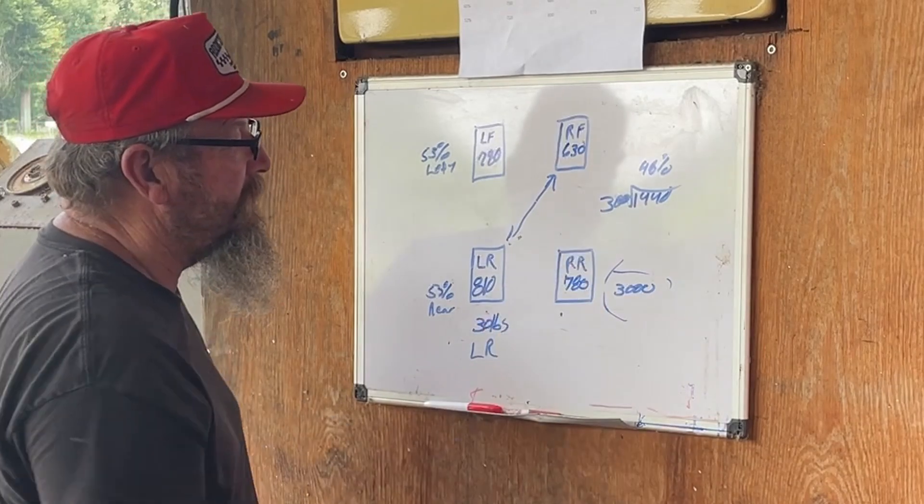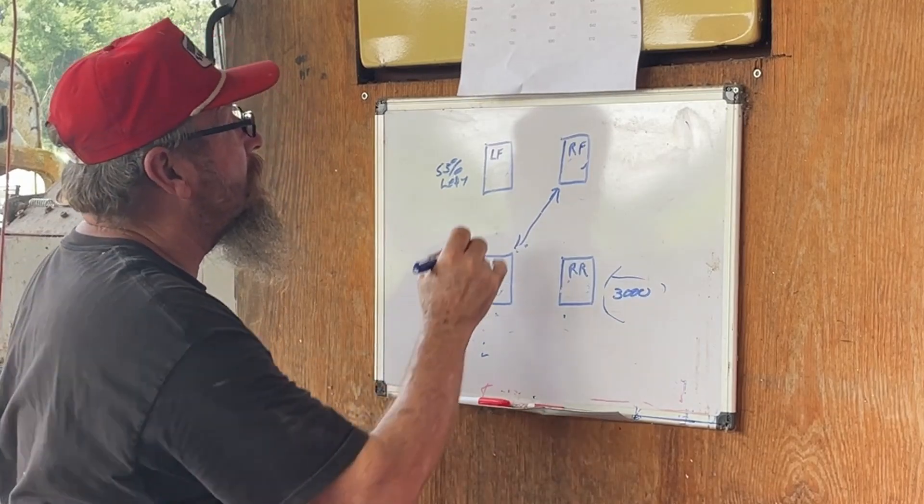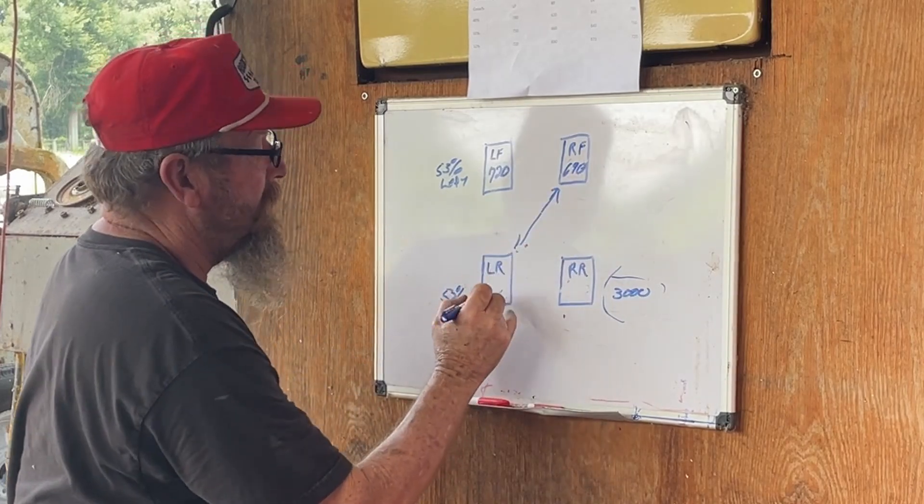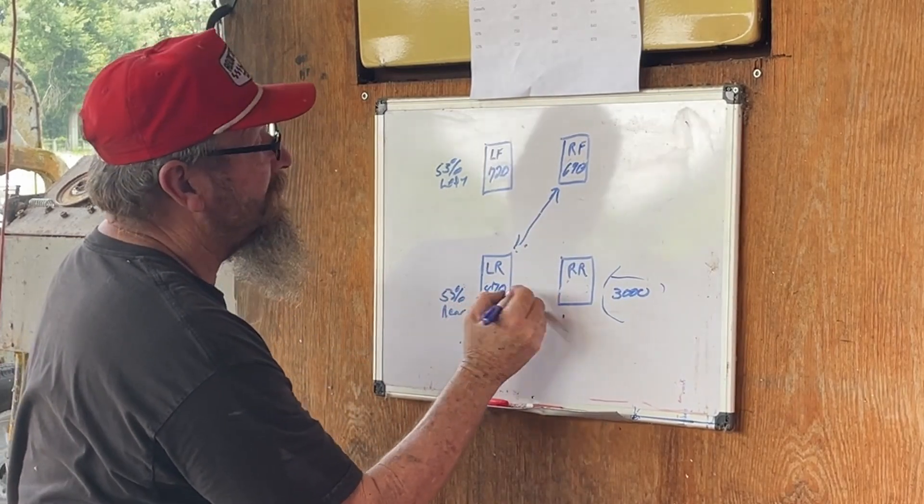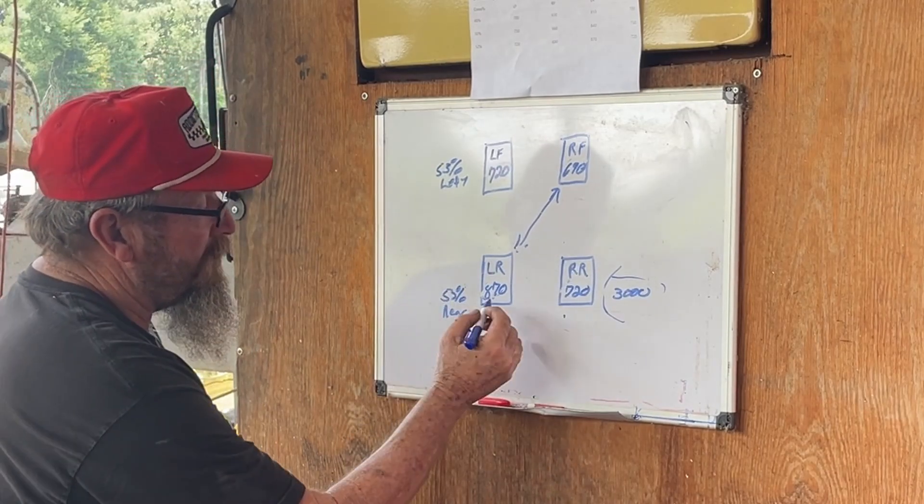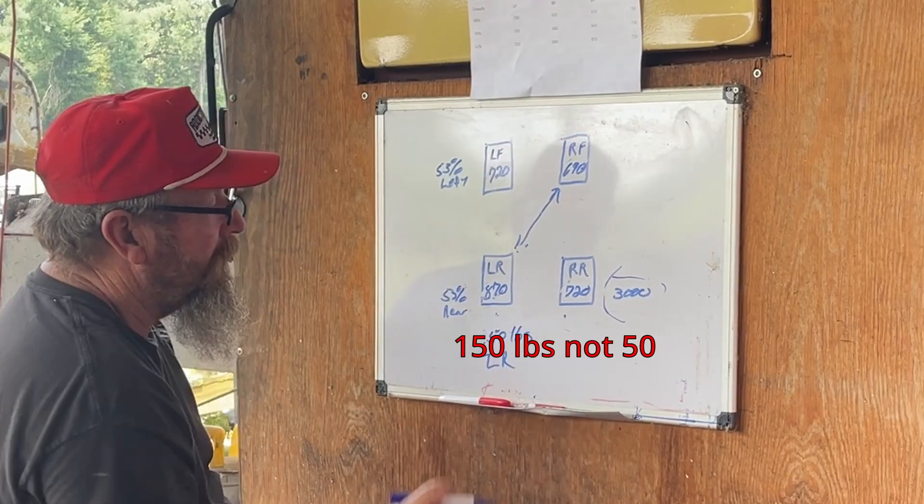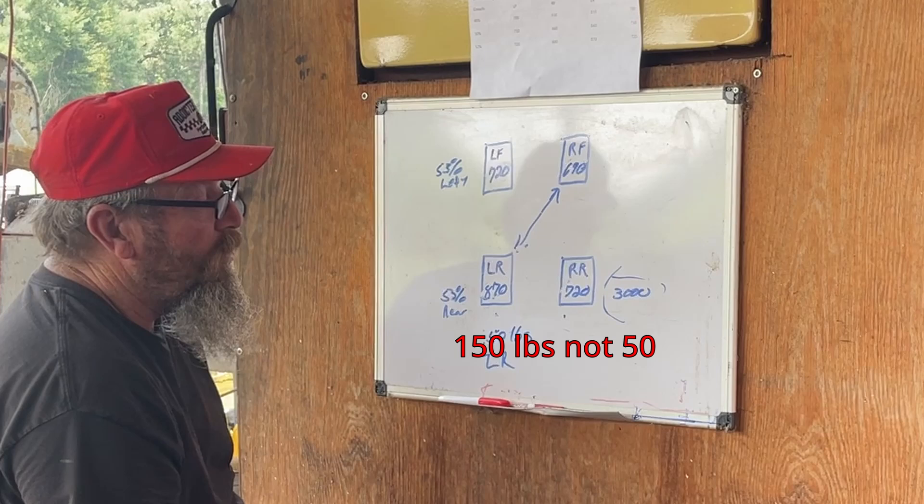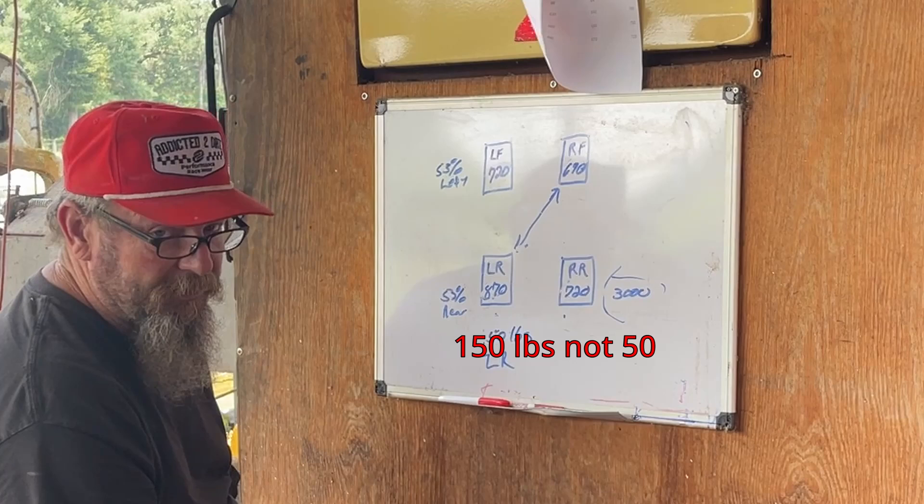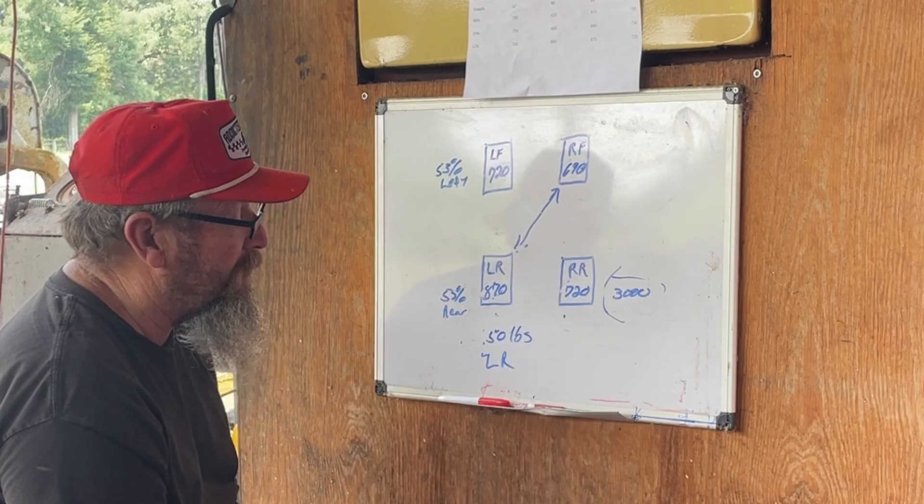We're dividing that by 3,000 getting 48 percent. Now we're going to move it up, a tighter car at 52 percent. We're looking at 720, 690, 870, and 720. So here we're 50 pounds left rear heavy. But when you go and you're talking to a person and you just tell them you're 50 pounds left rear heavy without telling them what other percentages you run, you're just not giving them much info.